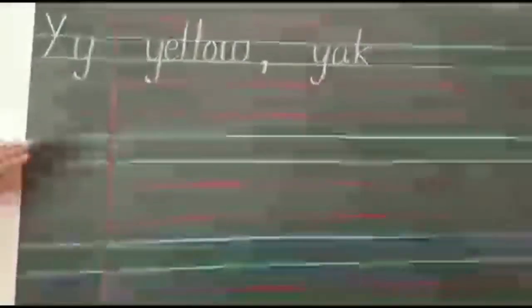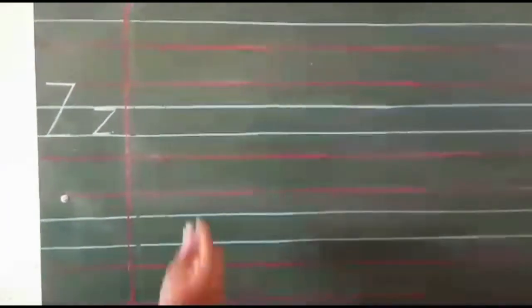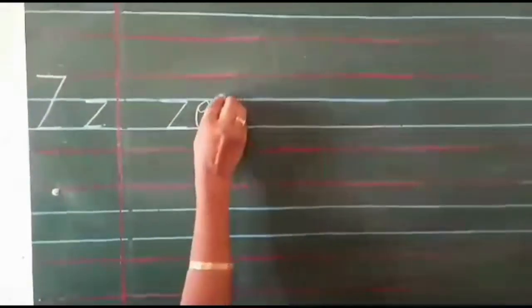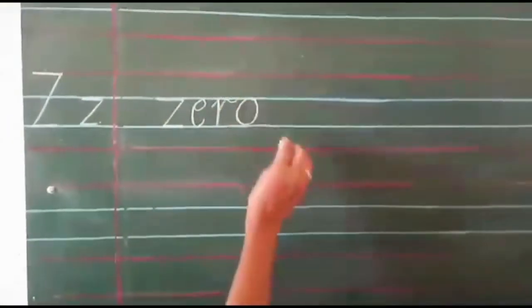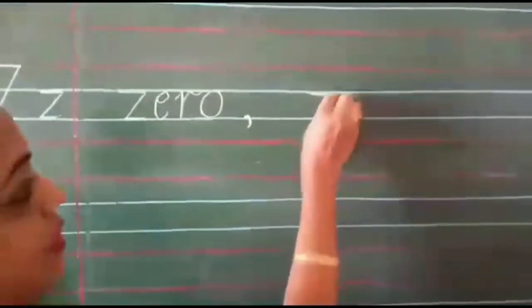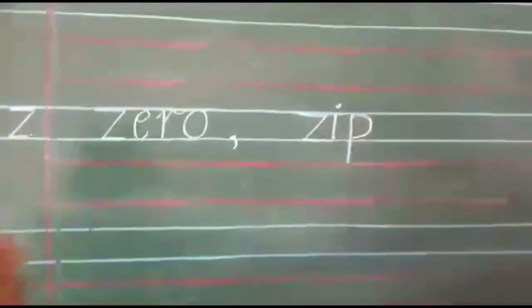Now leave one line. Capital letter Z, script letter Z. Z for zero, Z for zigzag, Z for zebra. So we will write the spelling of zero: Z, E, R, O — zero. Comma, one finger space. Z, I, P — zip. Okay.